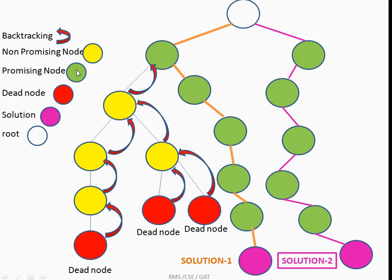Promising nodes, indicated in green, correspond to a partial solution and lead toward the solution. Non-promising nodes, shown in yellow, are also part of the partial solution construction but do not lead to the solution — they just lead to a dead end.